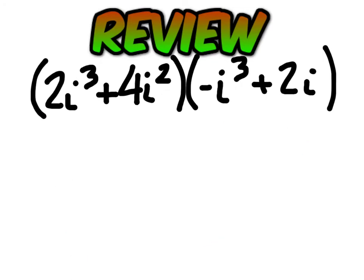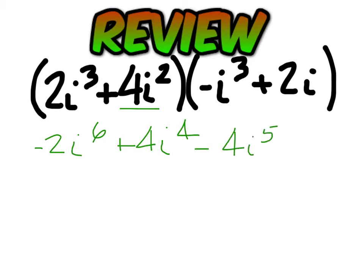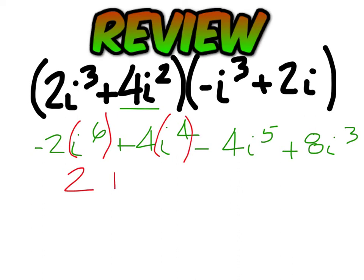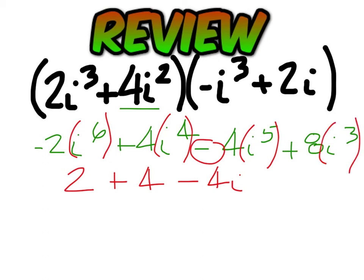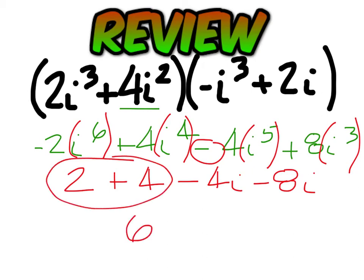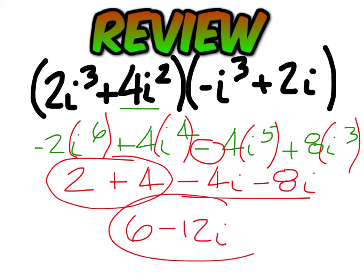Bring this one up here. When you multiply it out you should get negative 2 i to the sixth, plus 4 i to the fourth, then minus 4 i to the fifth, plus 8 i to the third. Simplify: i to the sixth is negative 1, so negative 1 times negative 2 is positive 2. i to the fourth is 1, so we have 4. i to the fifth is i, so we have minus 4i. i to the third is negative i, so we have negative 8i. Constants: 2 plus 4 gives 6. Imaginary: negative 4i minus 8i gives negative 12i. Final answer: 6 minus 12i.